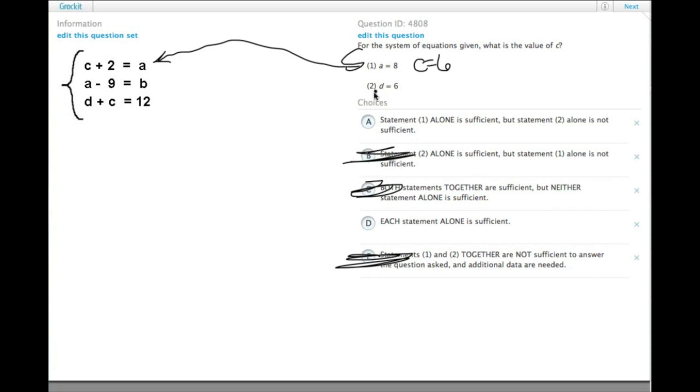Statement 2 tells us that d equals 6. If we plug d equals 6 into this equation, we have 6 plus c equals 12, so c equals 6. Statement 2 is also sufficient.